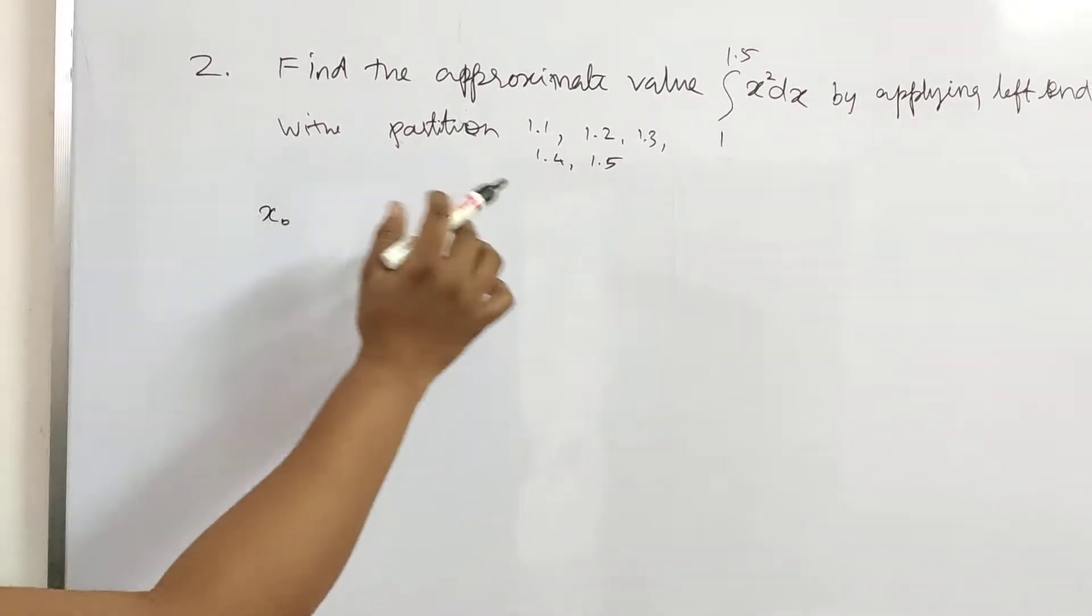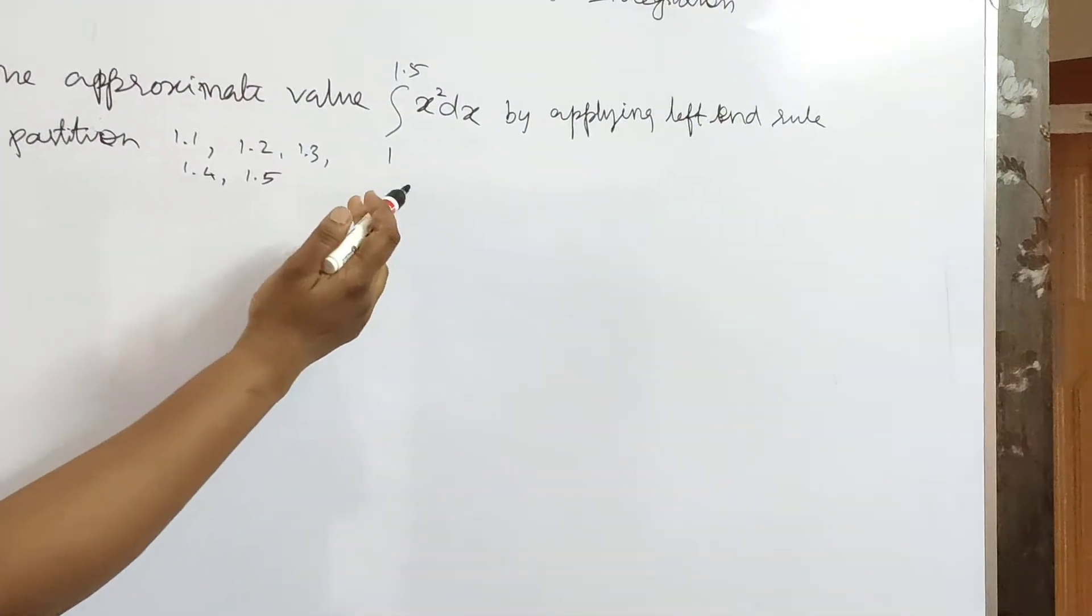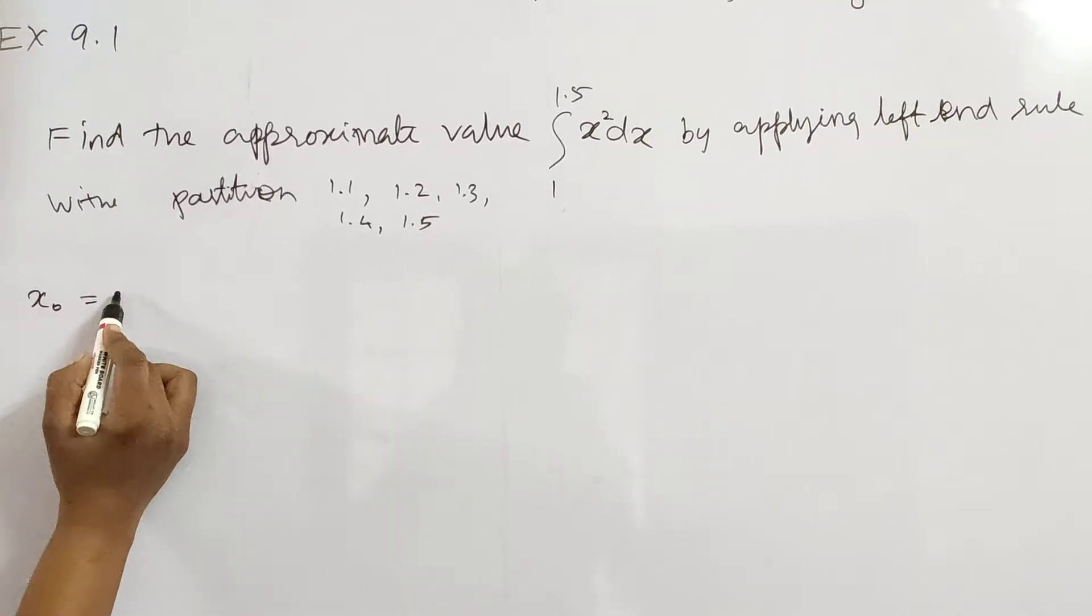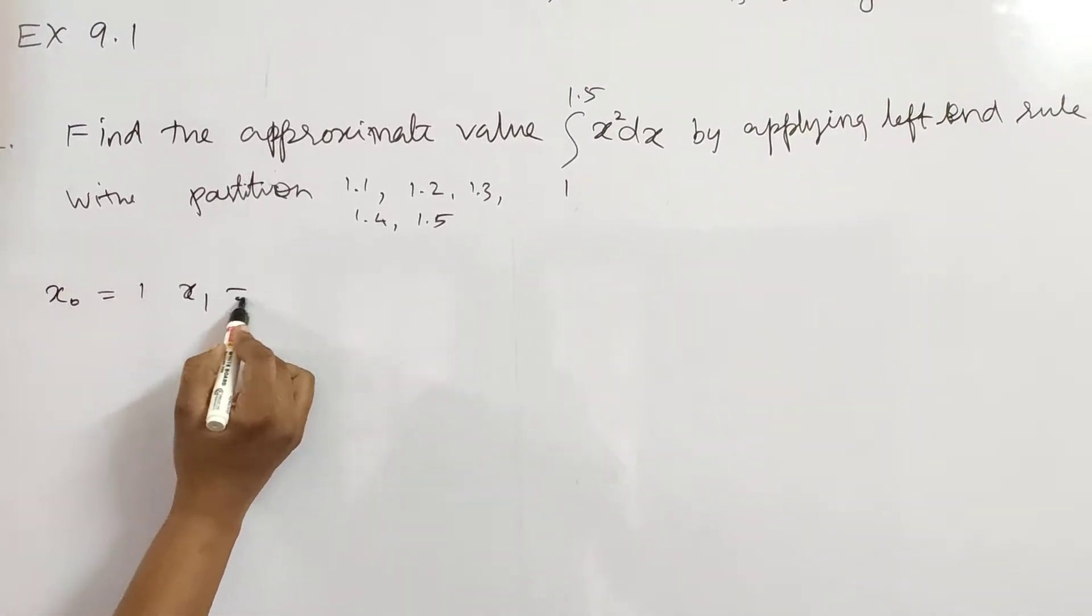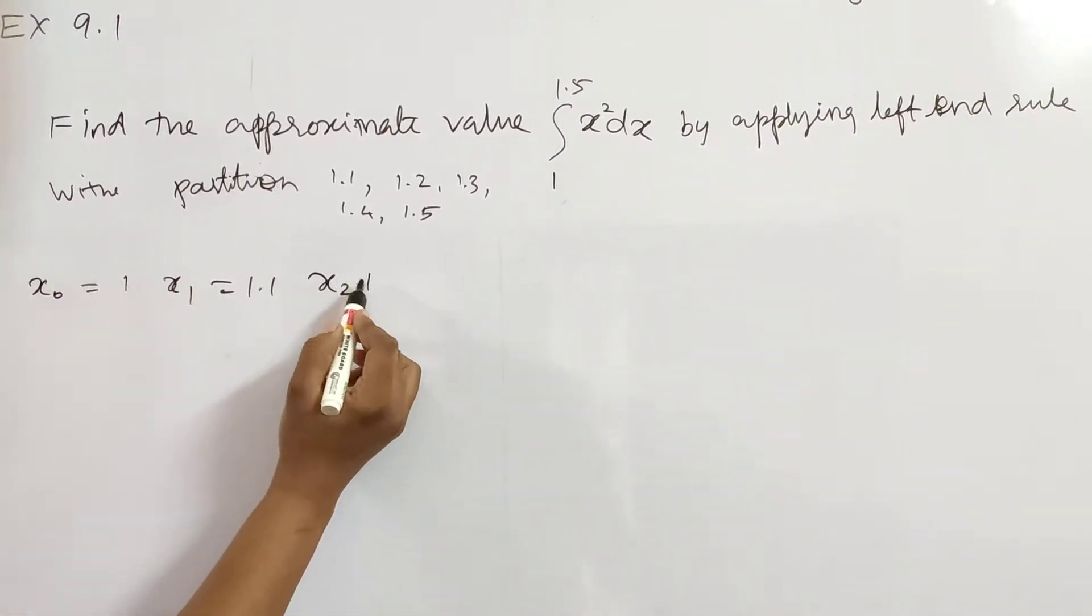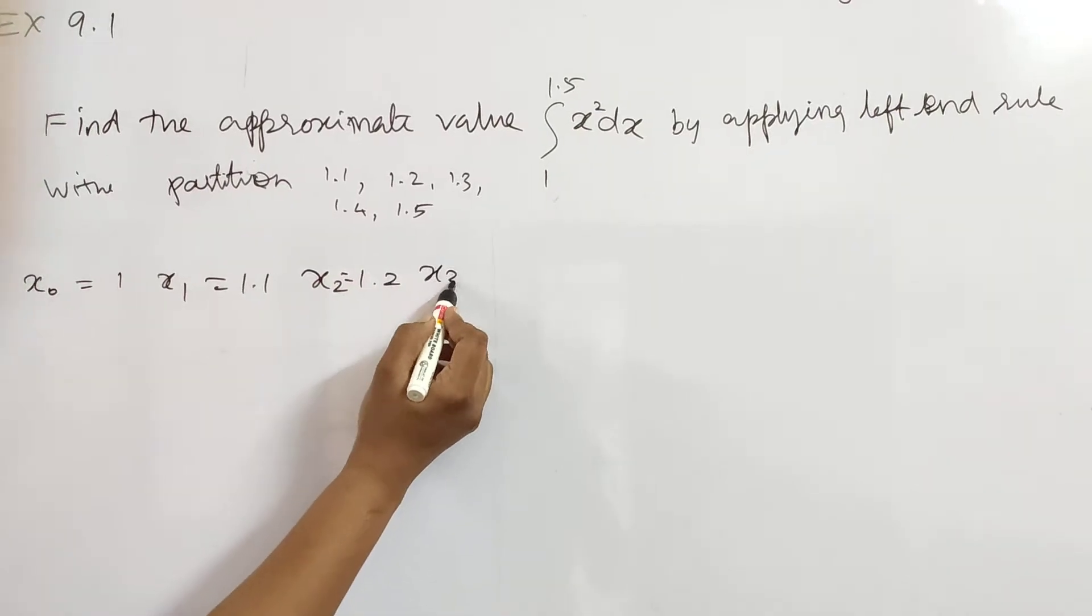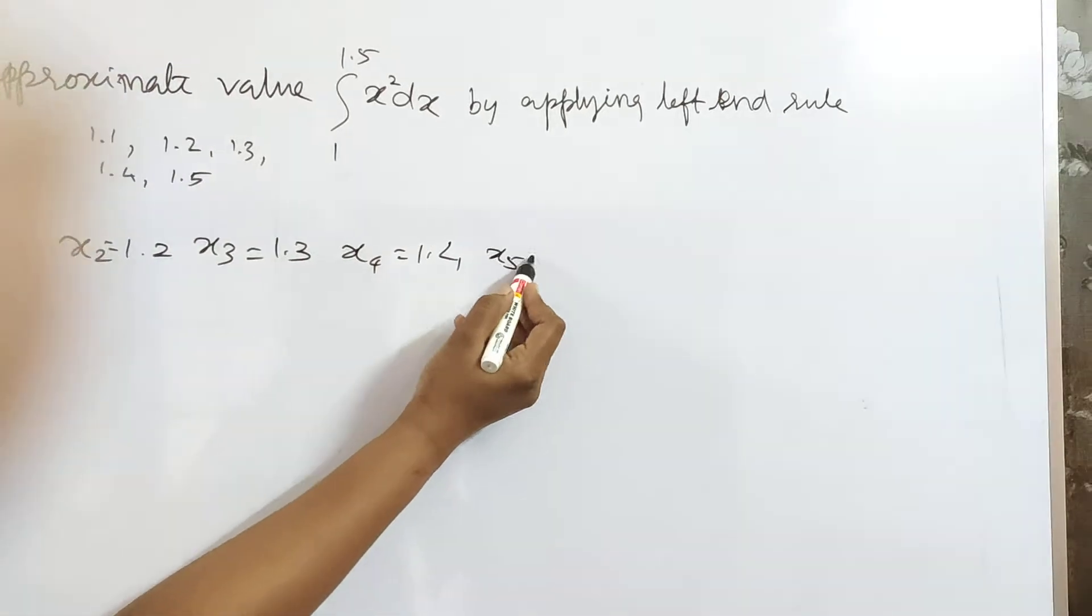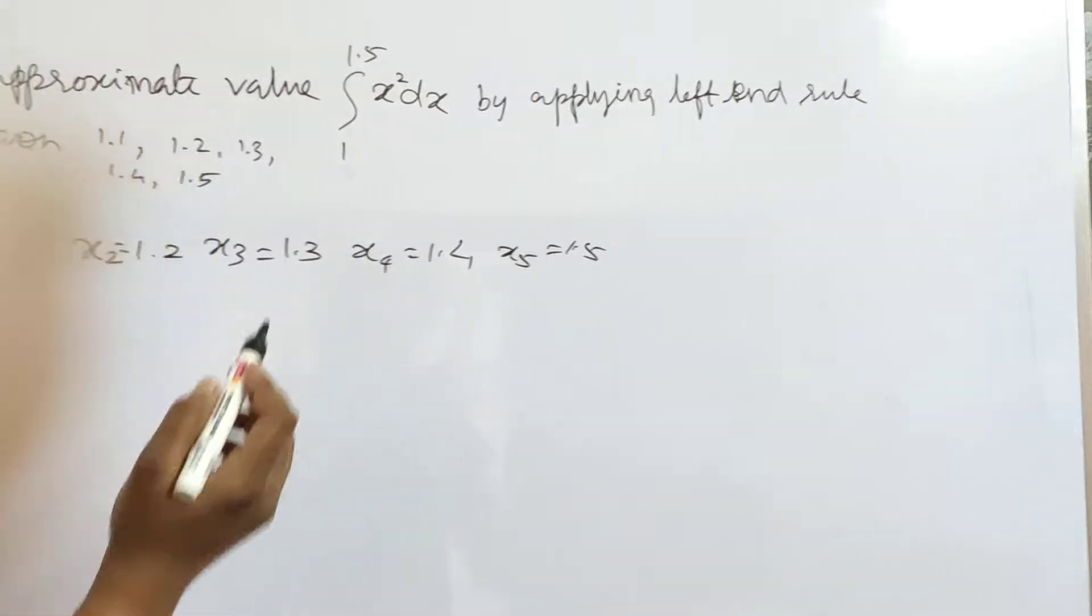In the next second problem, integral 1 to 1.5 of x squared dx with the same partition: x0 equals 1, x1 equals 1.1, x2 equals 1.2, x3 equals 1.3, x4 equals 1.4, and x5 equals 1.5.